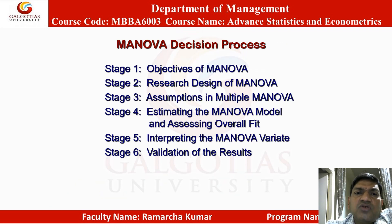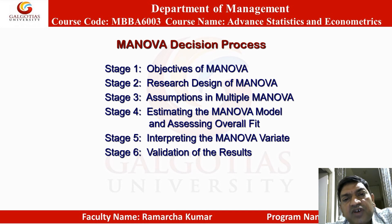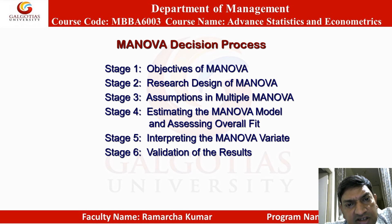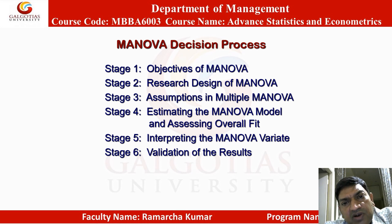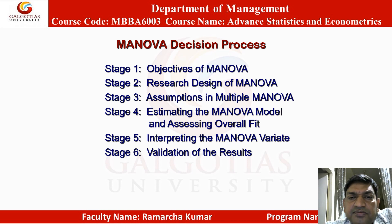The decision process for MANOVA has six stages: Stage 1 — objective of the MANOVA; Stage 2 — research design of MANOVA; Stage 3 — assumptions in MANOVA; Stage 4 — estimating the MANOVA model and assessing overall fit; Stage 5 — interpreting the MANOVA variates; Stage 6 — validation of the results.